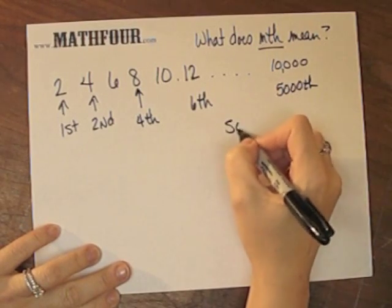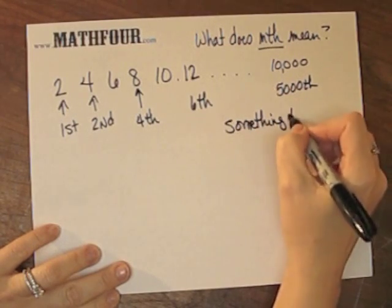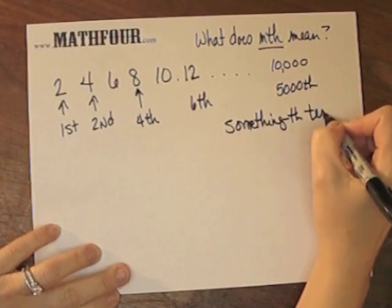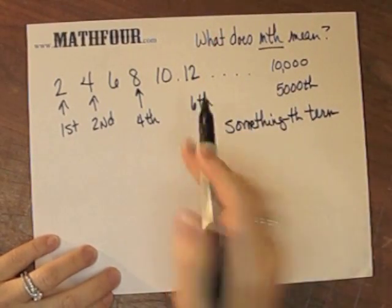you're going to want the, well, I don't know, the somethingth term. So term means the number associated with that particular counting.